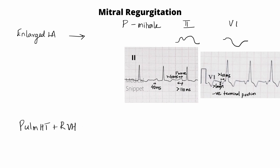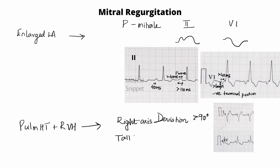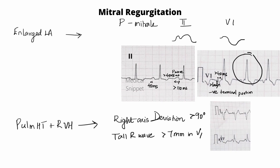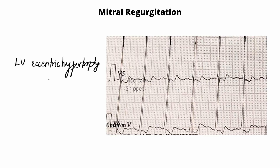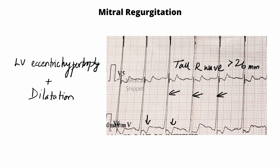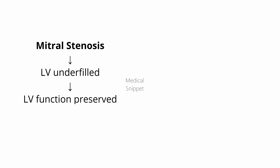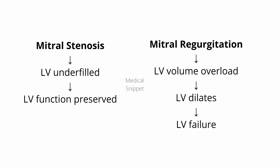Pulmonary hypertension and right ventricular hypertrophy causes right axis deviation and tall R wave in V1 that is more than 7 mm tall, as seen in mitral stenosis. If the left atrium further increases in size, atrial fibrillation sets in, as in mitral stenosis. Left ventricular dilatation and hypertrophy are observed as increased R wave voltage — more than 26 mm in V4, V5, V6 — and ST segment depression and T wave inversion in V4, V5, and V6. It should be noted that in mitral stenosis, the left ventricle is underfilled and left ventricular function is preserved, whereas in mitral regurgitation, left ventricular function deteriorates with time.